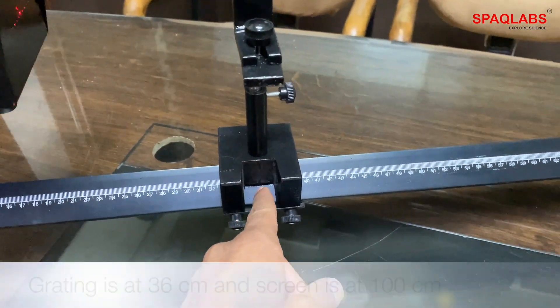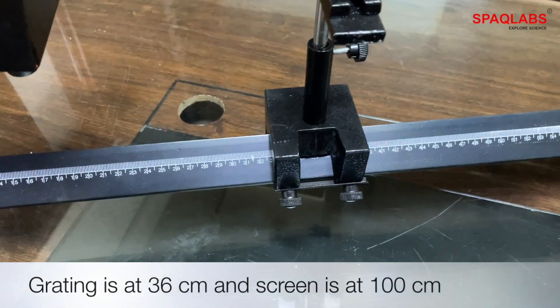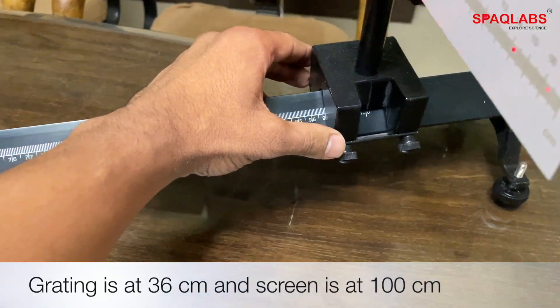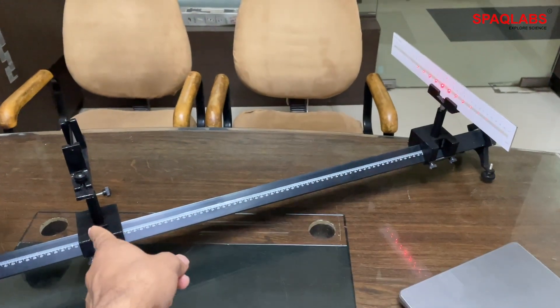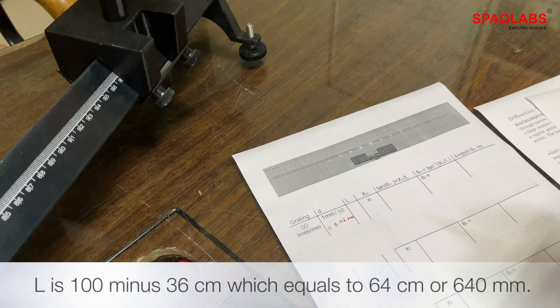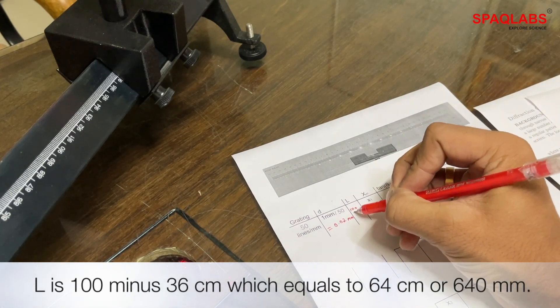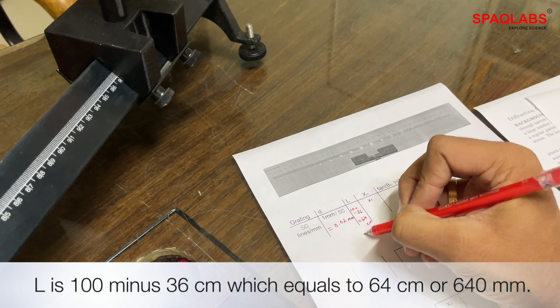Now L is the distance between the grating and the screen. The grating is at 36 centimeters and the screen is at 100 centimeters. So L is 100 minus 36 centimeters, which equals 64 centimeters or 640 millimeters.